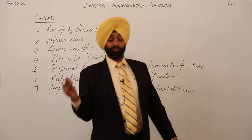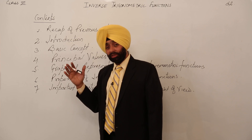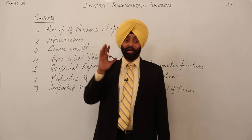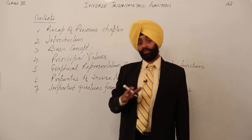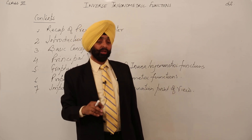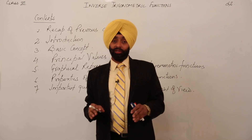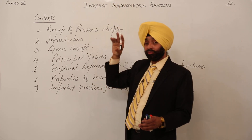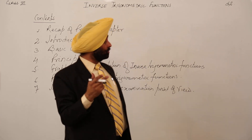Again coming back to class 11th — we went through the chapter that all the trigonometric ratios are not one-one. They are not one-one or onto on their natural domains. But normally we say they are surjective functions, meaning onto functions. They are not one-one. Now, when a function is not one-one but is onto, how can we find the inverse of a trigonometric function? This is the nice concept we are going to study today.